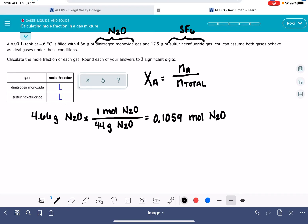And we need to do the same thing for the sulfur hexafluoride, 17.9 grams of SF6, convert that into moles of SF6. The mass of sulfur hexafluoride is 32 plus 6 times 19, 146 grams per mole.